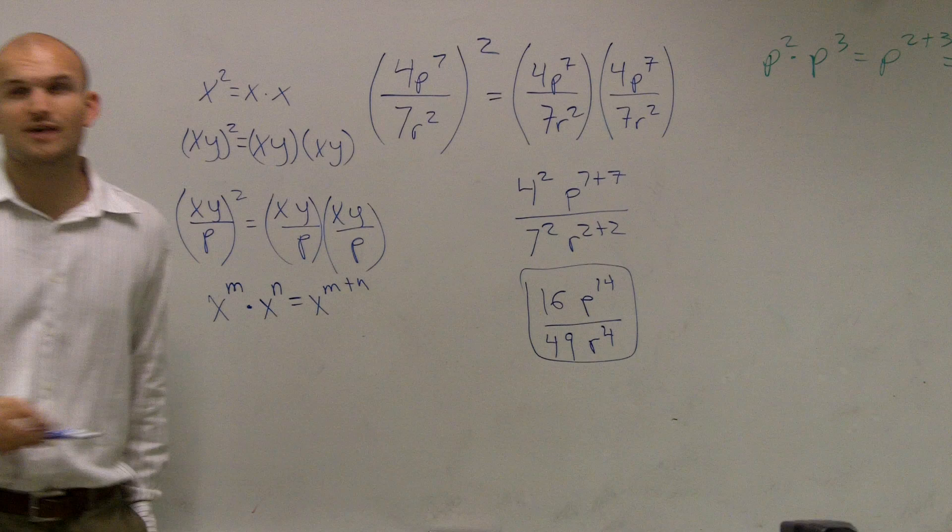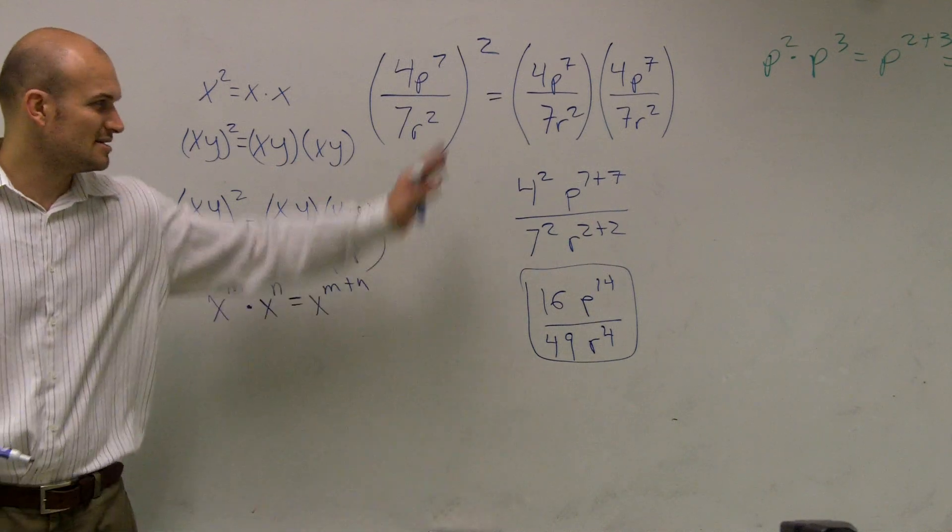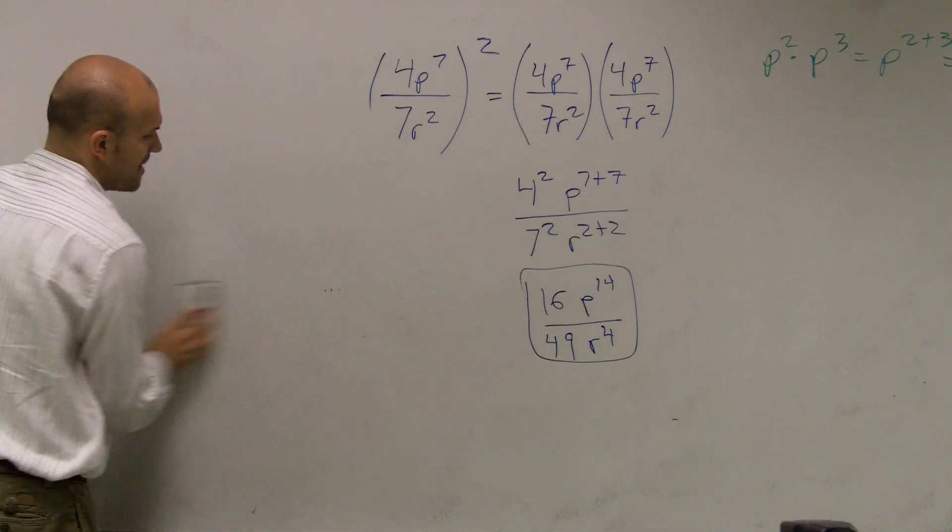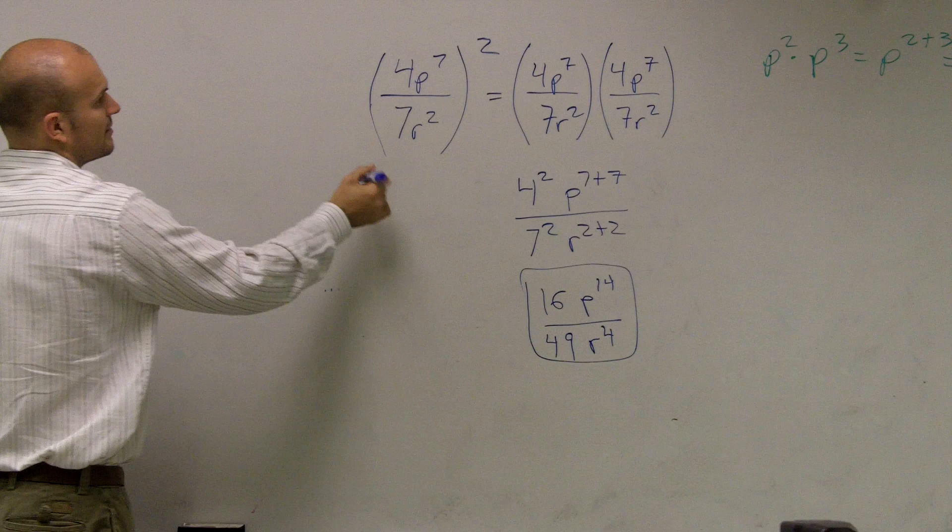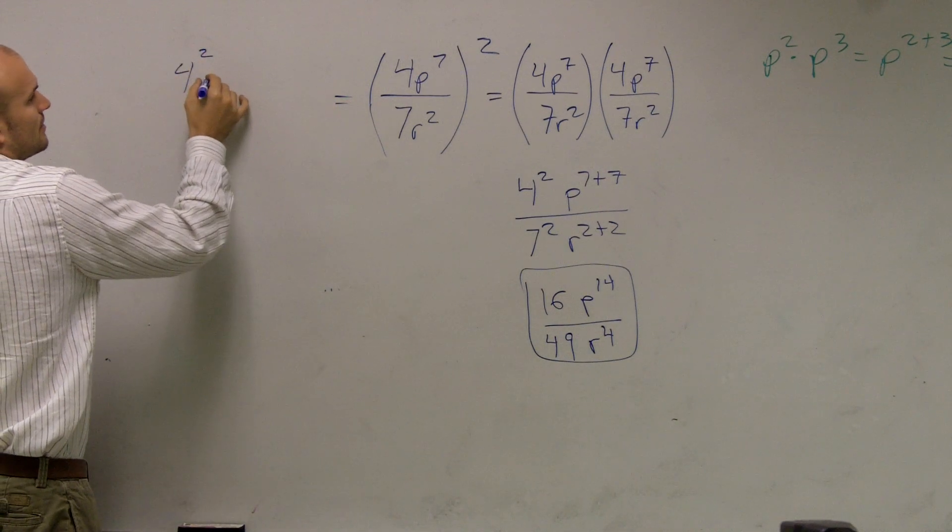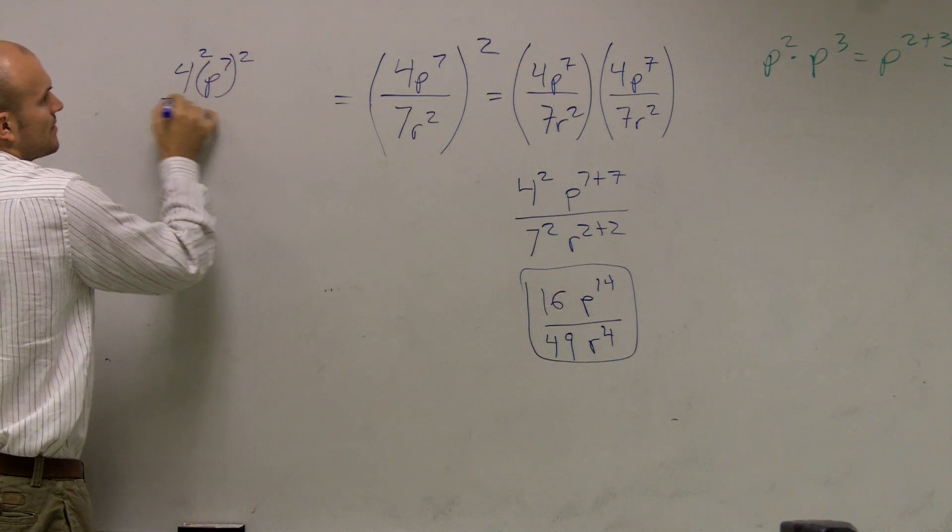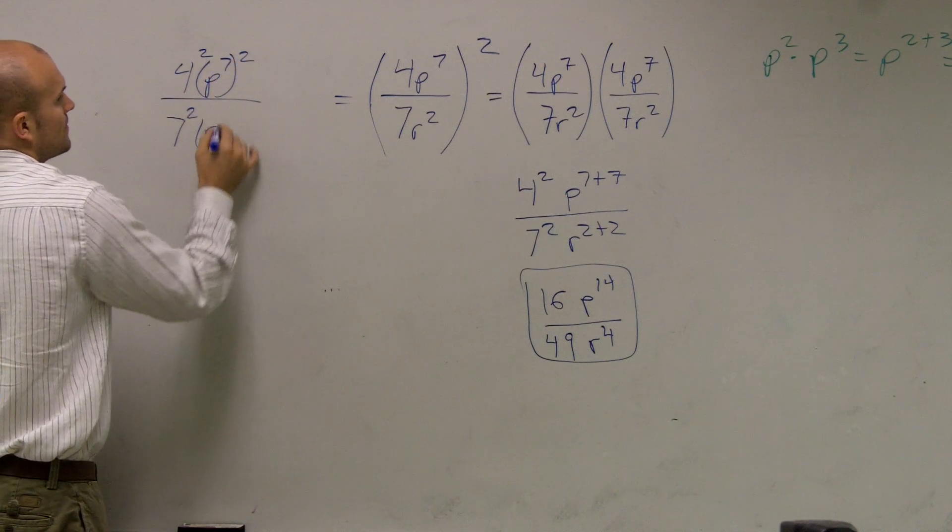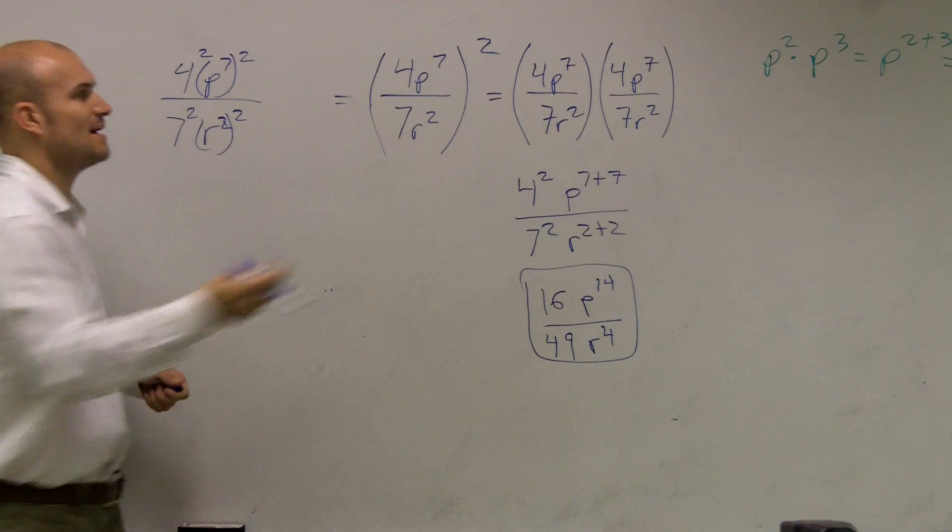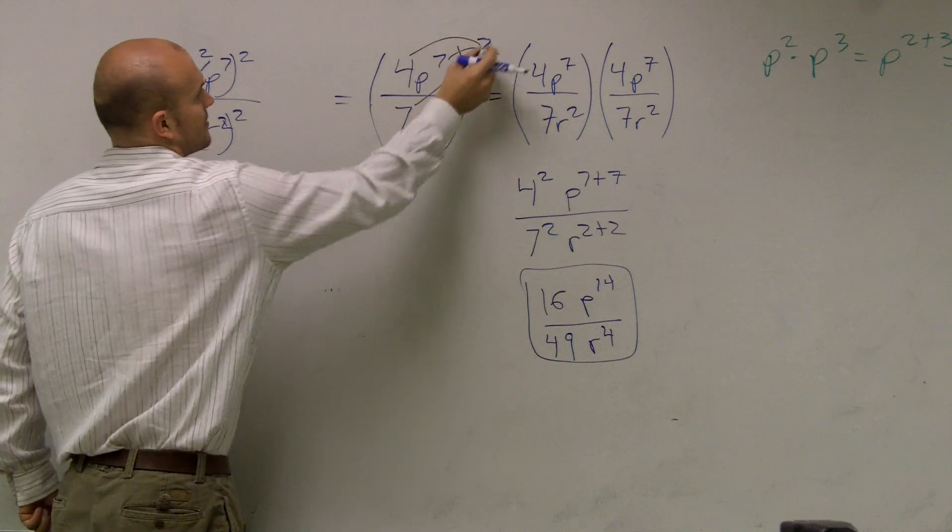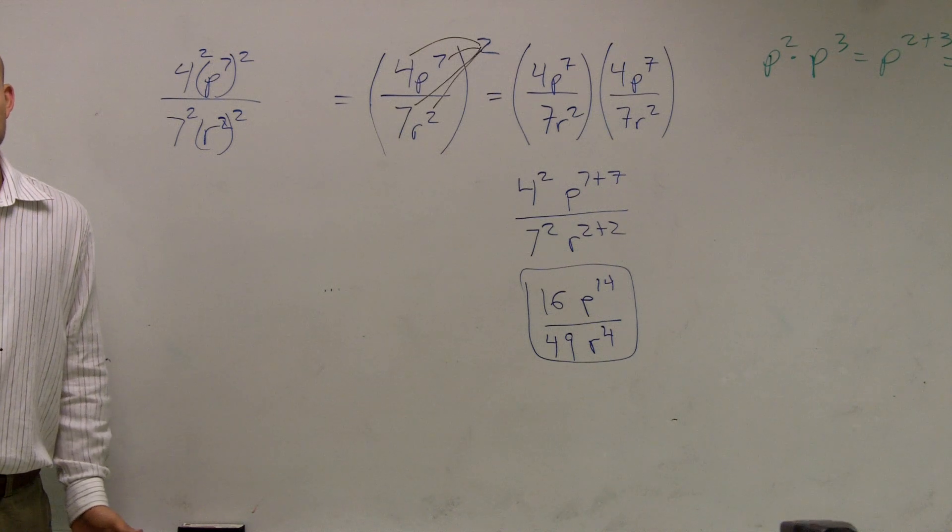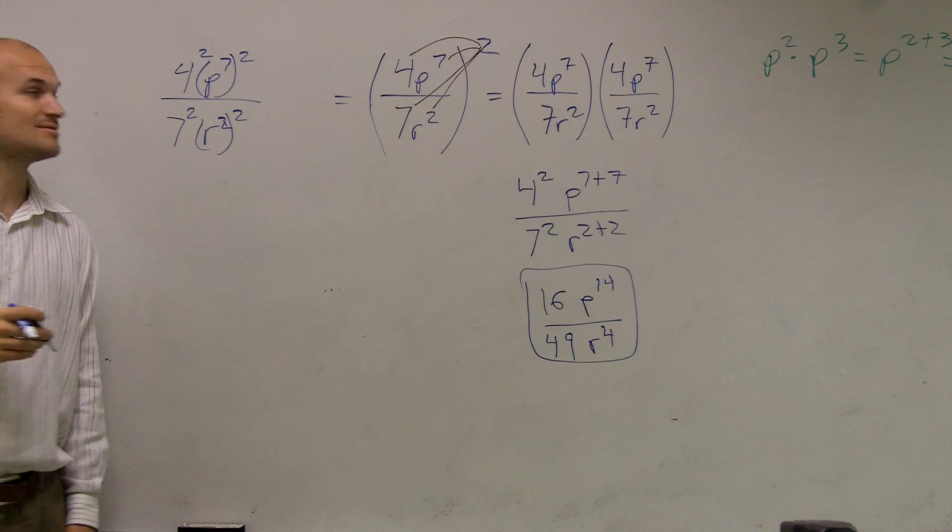If you guys kind of want a shortcut for that, you guys, some of you guys want a shortcut? Sometimes that's a lot of work. So a quick little shortcut you can do is remembering our power rule that this is the same thing as this. This is 4 squared, p to the 7 squared, 7 squared, r squared squared. So what I did was I took my square and I squared everything inside of my parentheses.